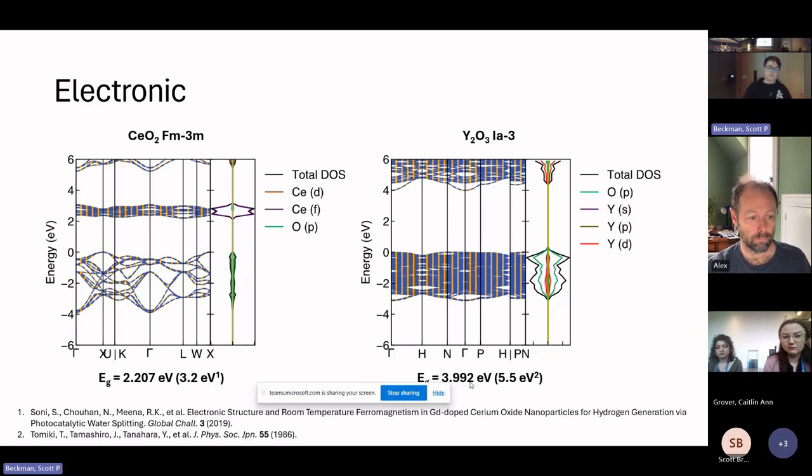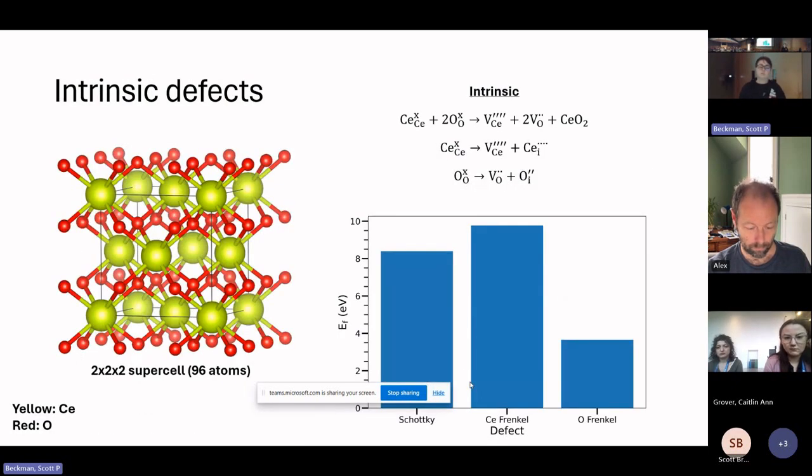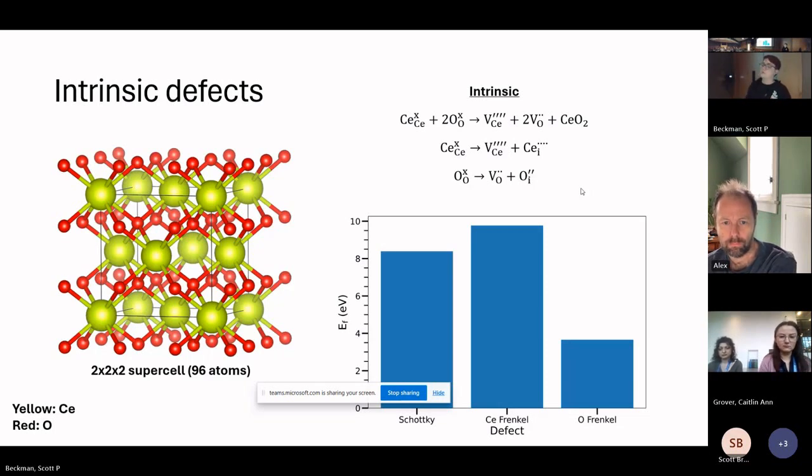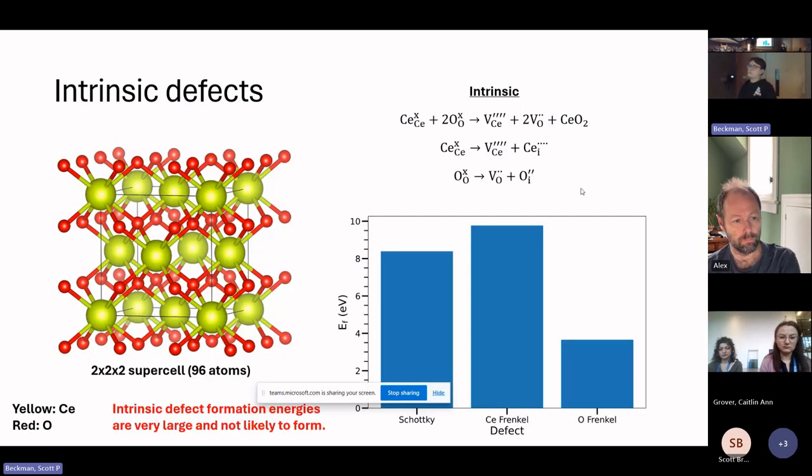As we know, these pure crystals aren't what we're interested in, and it's defects that make them interesting. To begin, I first looked at the intrinsic defects. We have our Schottky reaction here and our Frenkel pairs. One thing I should point out for the other computational people is that I did use a 2x2x2 supercell where we have 96 atoms. This is needed because if we use too small of a cell with periodic boundary conditions, when we introduce that defect we can get interactions of the defect as the cell is replicated. From these calculations, what we can see is that the intrinsic defects formation energies are actually very high, and they're not as likely to form.